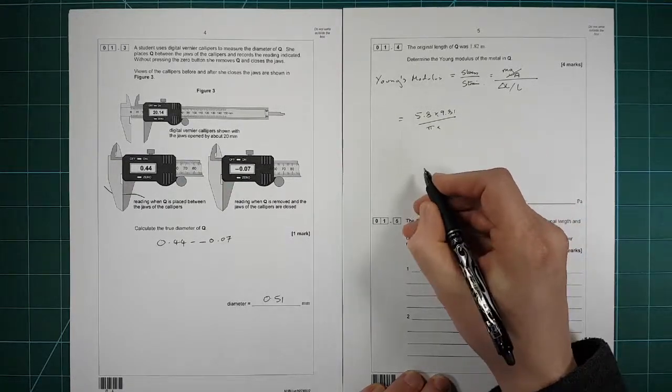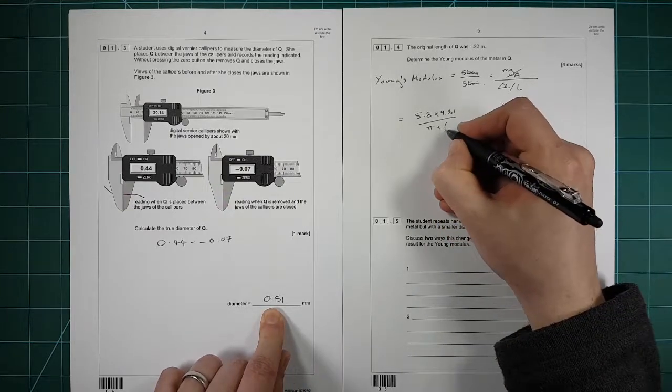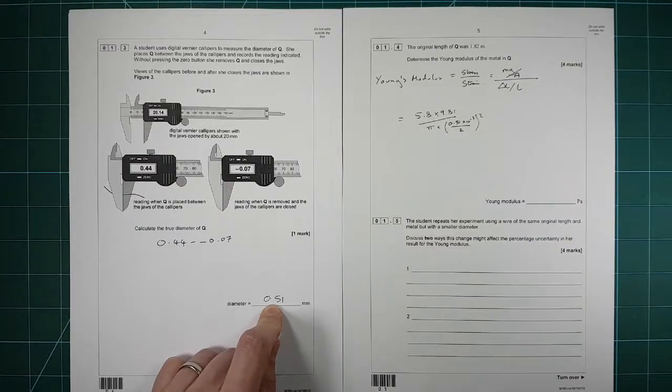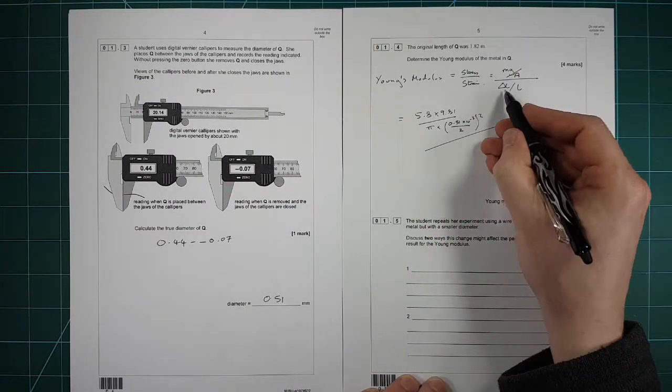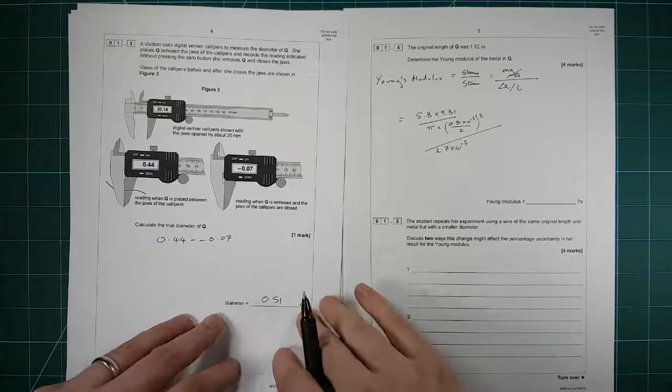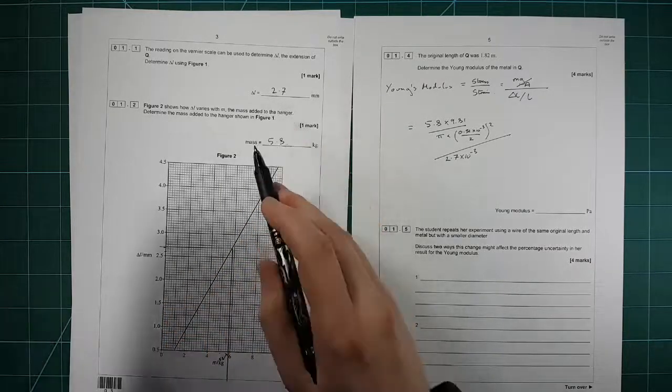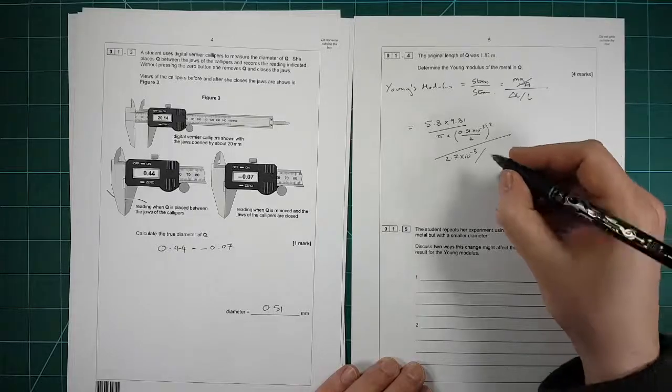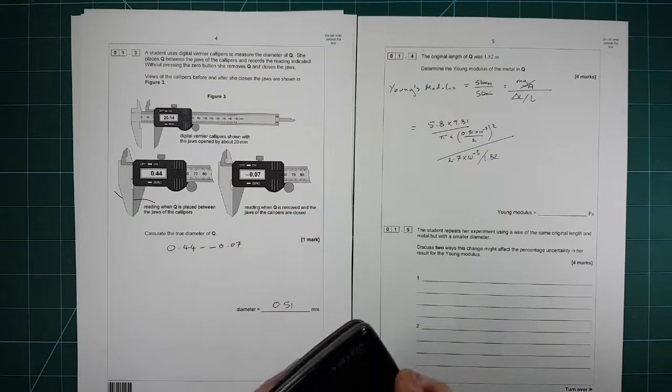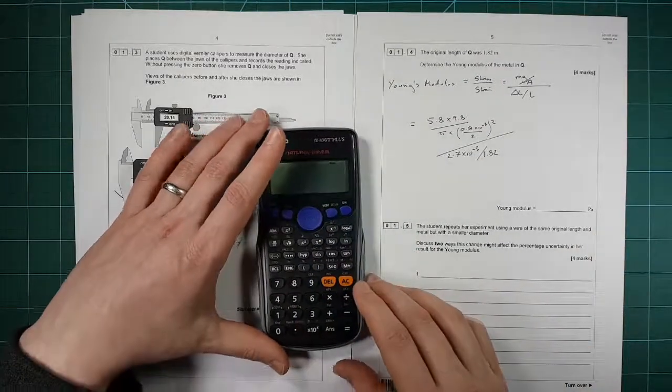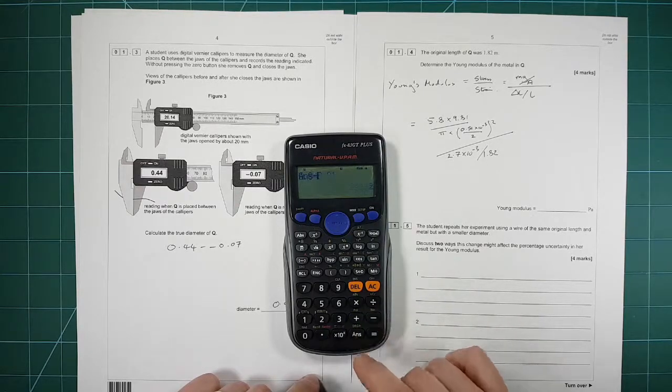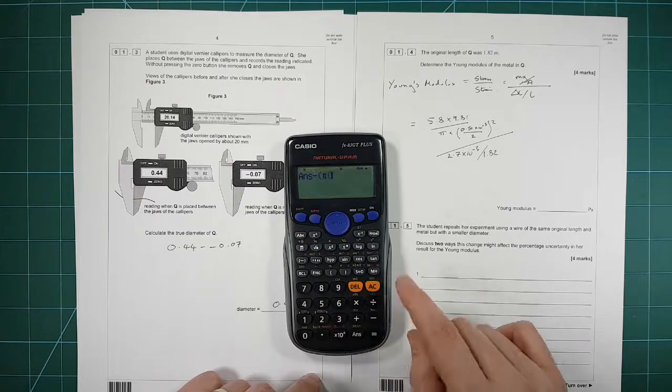So we've got quite a big calculation now. First of all, we need to put in the weight, which is 5.8 kilograms times by 9.81, which is acceleration due to gravity. We then divide that by the cross-sectional area. Cross-sectional area is pi r squared. So pi times the radius, which was 0.51 times 10 to the minus 3 divided by 2, and we need to square that.